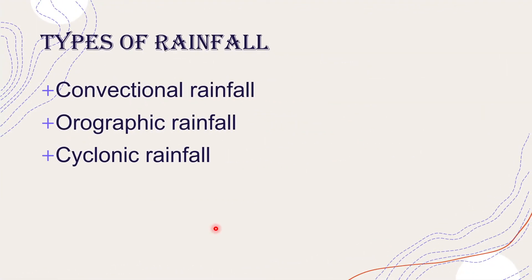Next we come to the different types of rainfall. Basically there are three types of rainfall: convectional rainfall, orographic rainfall, and cyclonic rainfall. Let us learn first about convectional rainfall.